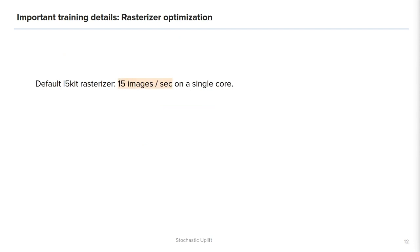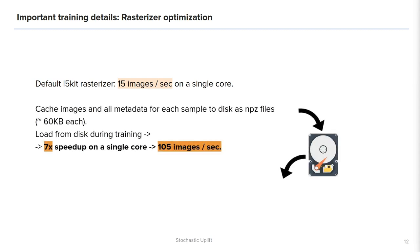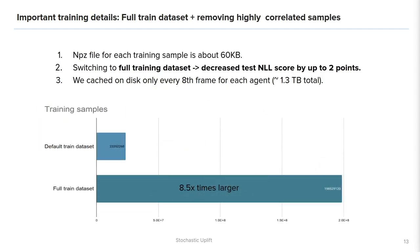One of the major speed bottlenecks in the pipeline was image rasterization. The default rasterizer is pretty slow and produces around 15 images per second on a single CPU core. We cached the rasterized images to disk as compressed NPZ files and during training we just loaded them from disk instead of costly online rasterization. This resulted in seven times speedup and we could read more than 100 images per second using a single process.